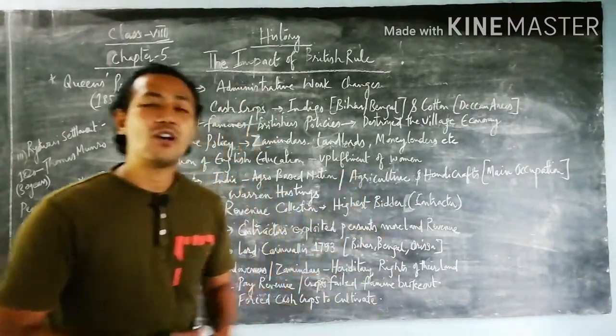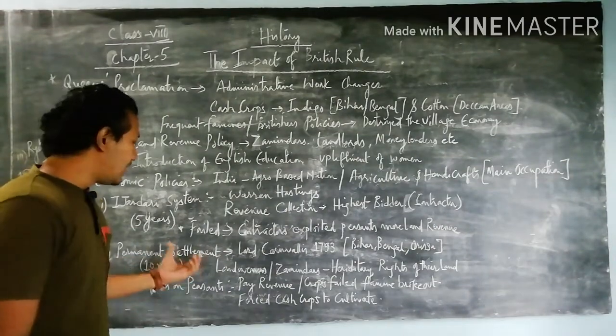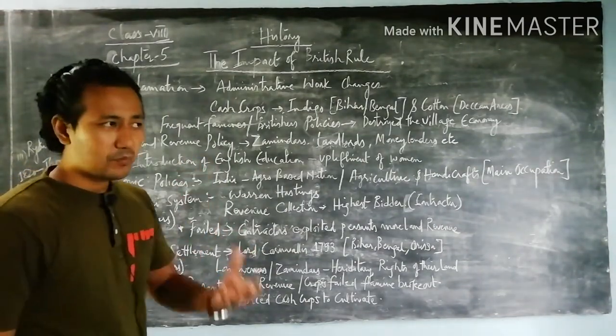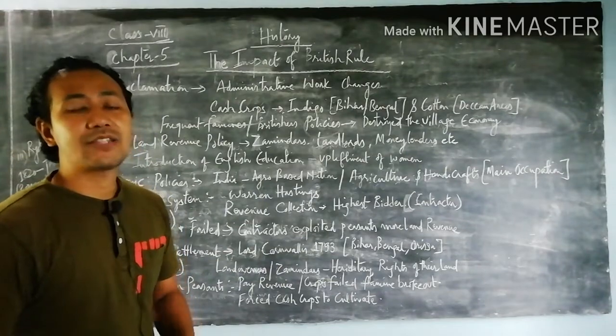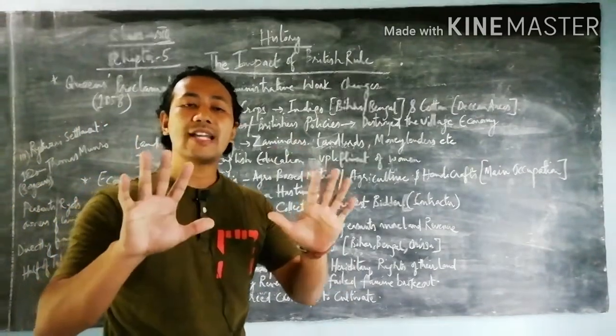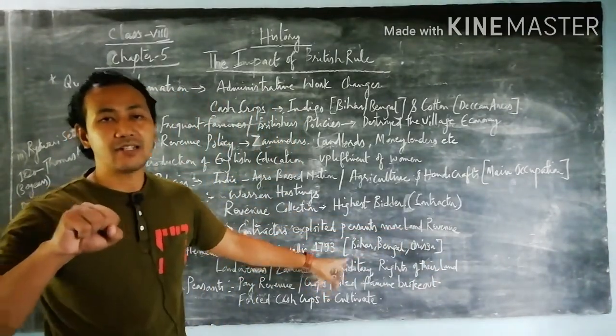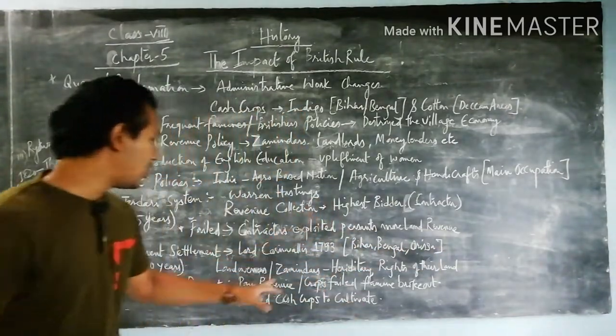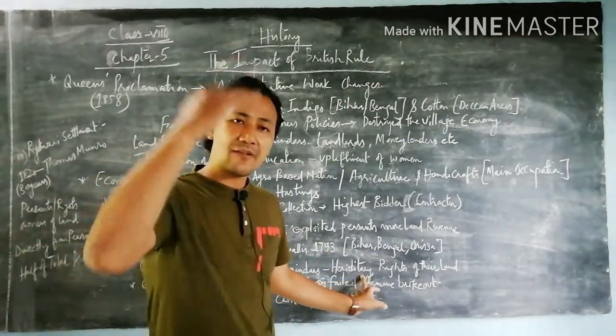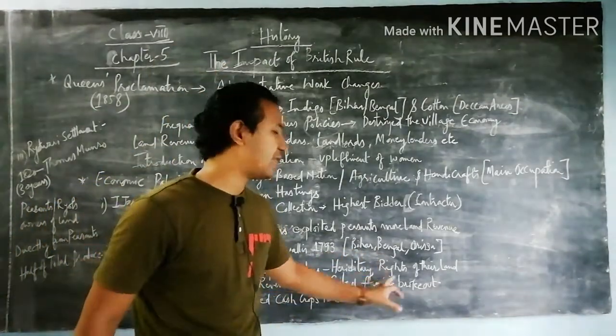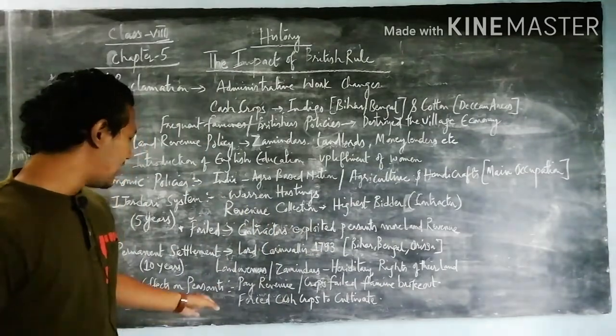Next we focus on Permanent Settlement. This was one of the policies used by Lord Cornwallis in the year 1793 for one decade, that is 10 years. Within 10 years, three Indian states were targeted: Bengal, Bihar, and Odisha. Whoever were the landowners or zamindars, they were the heritage from their forefathers and had the right to occupy the whole land in huge numbers.